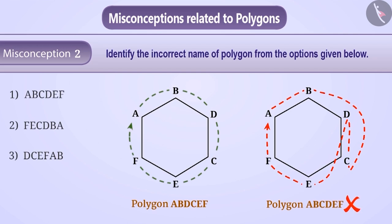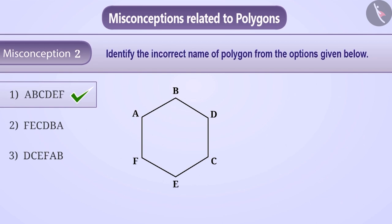Some students understand that naming the polygon starts from the left side only. Therefore, they think that the name of the polygon will start from either F or A and not from D. Therefore, they think that the name given in option 3 is incorrect. Hence, they give the answer as option 3. But this is a wrong answer.